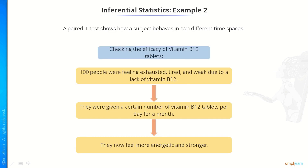Now, let us take another example. Here we will talk about paired t-test. What is this paired t-test? The paired t-test shows how a subject behaves in two different time spaces. For example, we wanted to check the efficacy of vitamin B12 tablets. There were 100 people who were feeling exhausted, tired, and weak due to lack of vitamin B12.